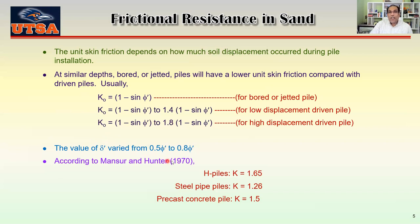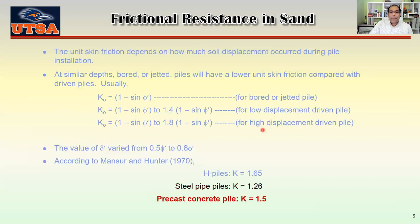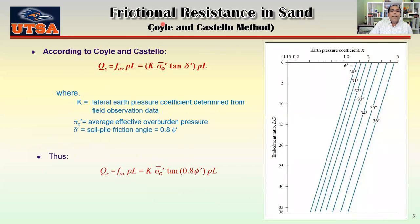According to Mansoor and Hunter, for an H-pile (high displacement), K equals 1.65. For a steel pipe pile (low displacement), K equals 1.26. For a precast concrete pile (also high displacement), K equals 1.5. This is the Mansoor and Hunter approach. The Coelho and Castillo method gives you a chart from which you can find out your K.